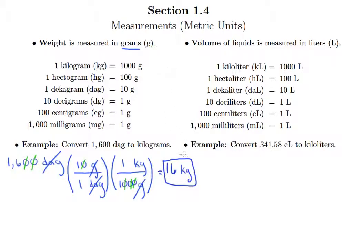So our next example involves volume in the metric system. Volume is measured, at least liquid volume is measured in liters. And again, all the same prefixes apply.